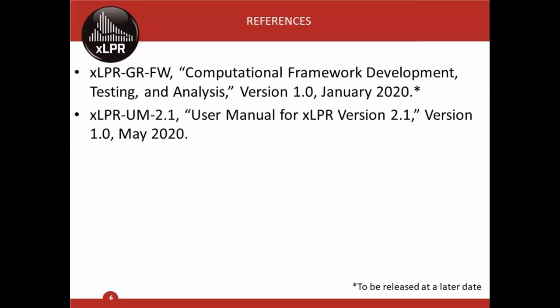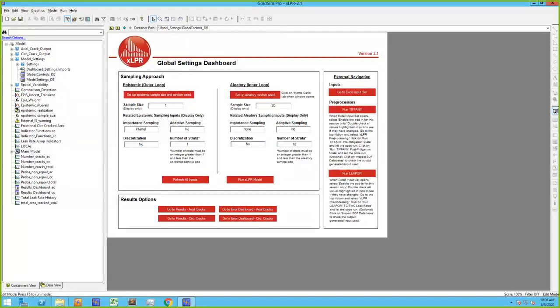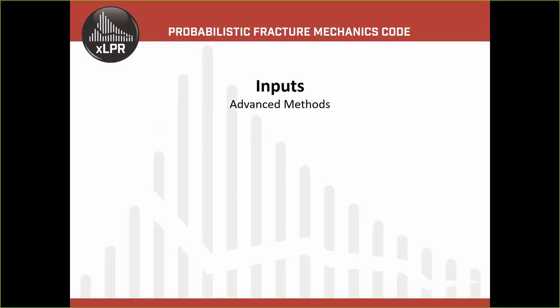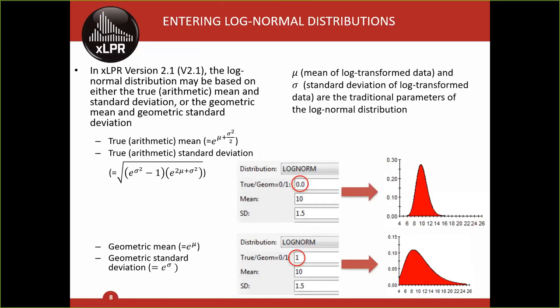Now I'm going to go through an assortment of topics covering various advanced methods, grouped by category. This first category will be focused on inputs-related topics. The first item is related to log normal distributions. One item that has led to some confusion in the use of XLPR is the definition of log normal distributions within GoldSIM. Typically, log normal distributions are defined by mu — the mean of the log-transformed theta — and sigma, the standard deviation of the log-transformed theta. These are sometimes also referred to as log mu or log sigma.